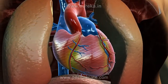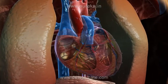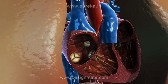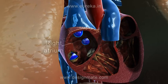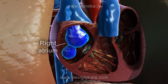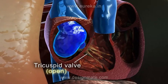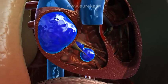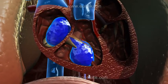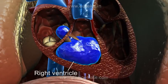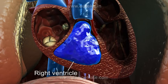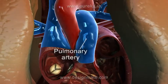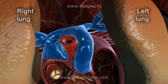The heart is a complex pumping organ. If we look at a section of the heart, we observe that it receives deoxygenated blood from different parts of the body in its right atrium. The tricuspid valve opens and blood keeps flowing into the right ventricle. Then the right atrium contracts, pushing the remaining blood into the right ventricle, which in turn contracts to push the blood into the pulmonary arteries, which carries the blood to the lungs.